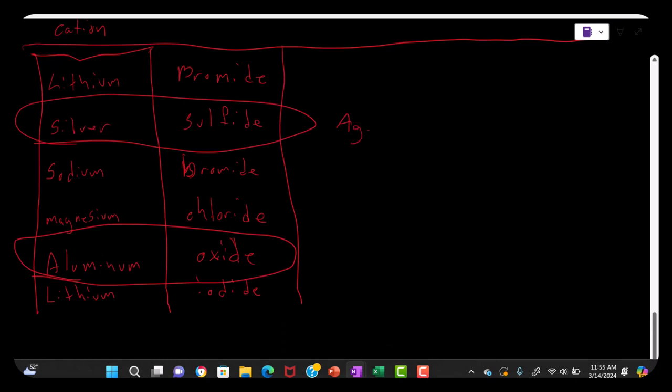If you notice, their formulas have a subscript. The silver has a subscript of two. Aluminum has a subscript of two, and oxygen has a subscript of three. We do not take this into consideration when we name the compound. These are simply negated.